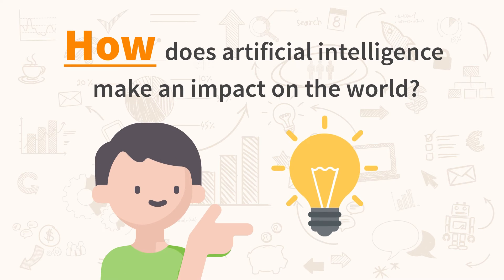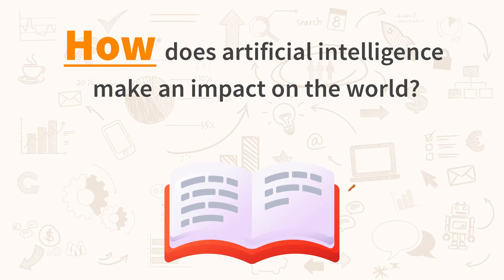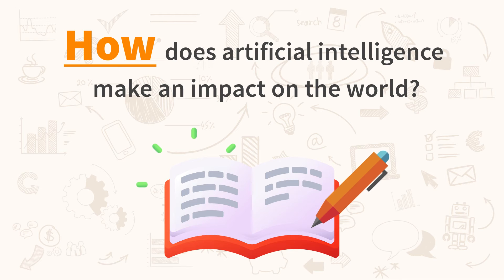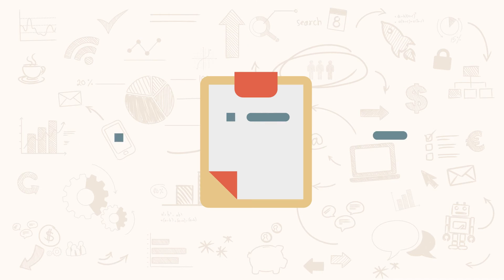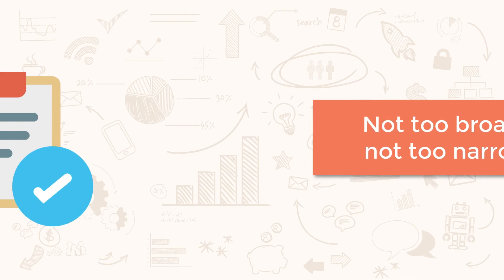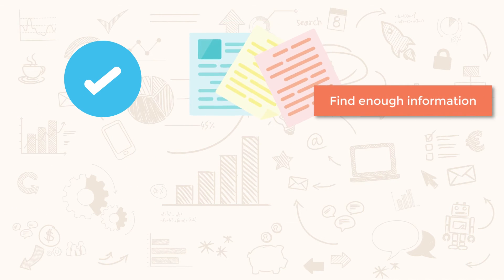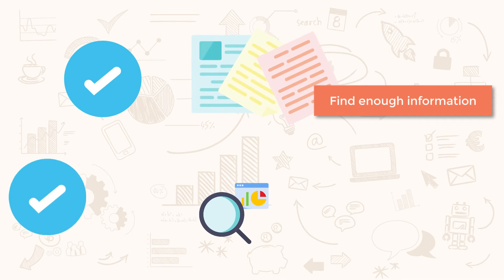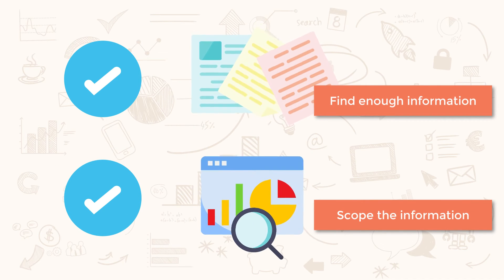It seems better now. However, you would probably need to write an entire book to answer this question appropriately. So this comes to the second point: your research question should not be too broad or too narrow. The scope should be broad enough so that you can find enough information, yet narrow and focused enough to scope your information.